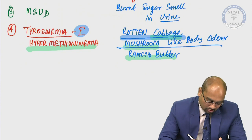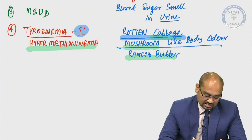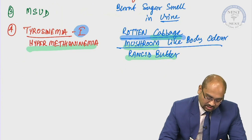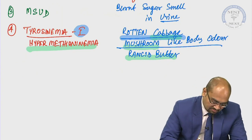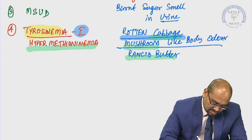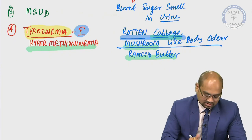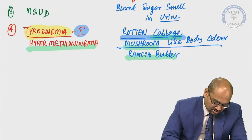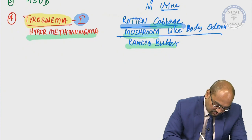If both tyrosinemia type 1 and hypermethioninemia are given in the options and they ask about cabbage-like body odor, please mark tyrosinemia type 1 as the better answer over hypermethioninemia.